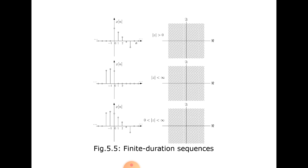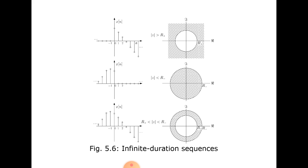For a finite duration sequence, modulus of z is greater than 0 and less than infinity, with n lying between 0 and infinity. This is the corresponding Z-plane for the sequence. For the infinite duration sequence ROC: in the Z-plane we have real and imaginary parts, and the ROC is the exterior of the unit circle, while modulus of a less than r means the interior part of the unit circle.